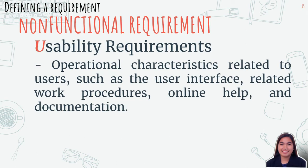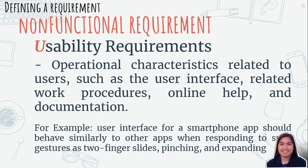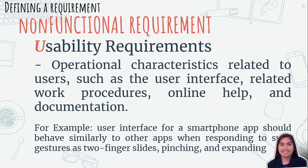The first non-functional category is usability requirements — an operational characteristic related to a user such as the user interface, related work procedures, online help, and documentation. For example, the user interface for a smartphone app should behave similarly to other apps when responding to gestures such as two-finger slides, pinching, and expanding. Additional requirements might include menu format, color schemes, use of the organization's logo, and multilingual support.